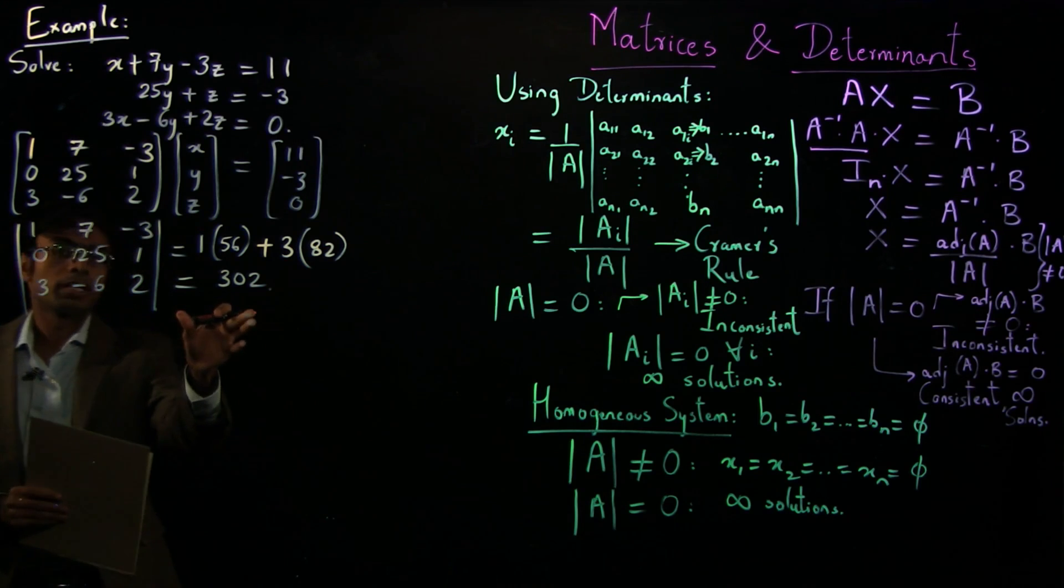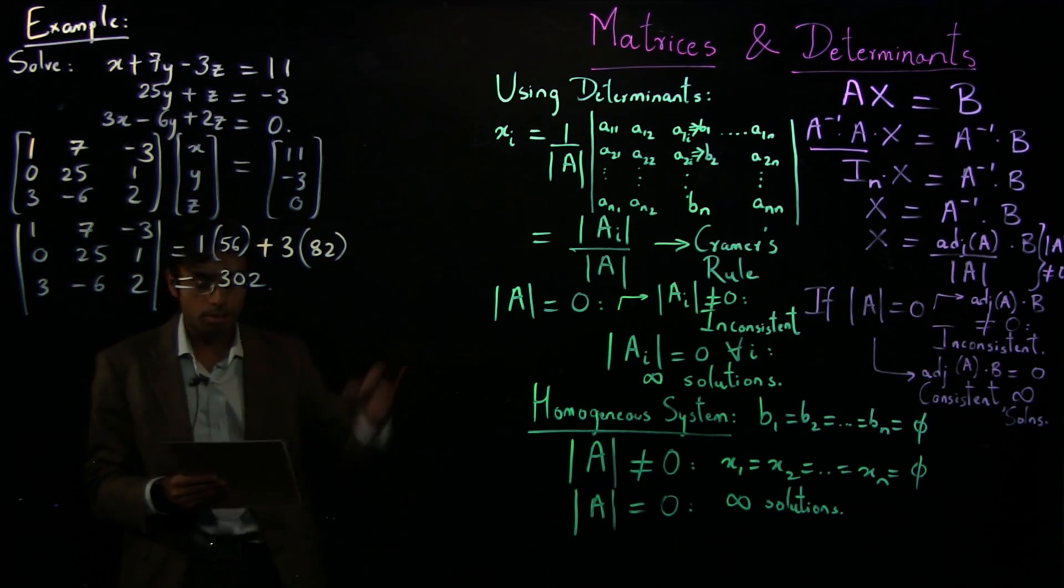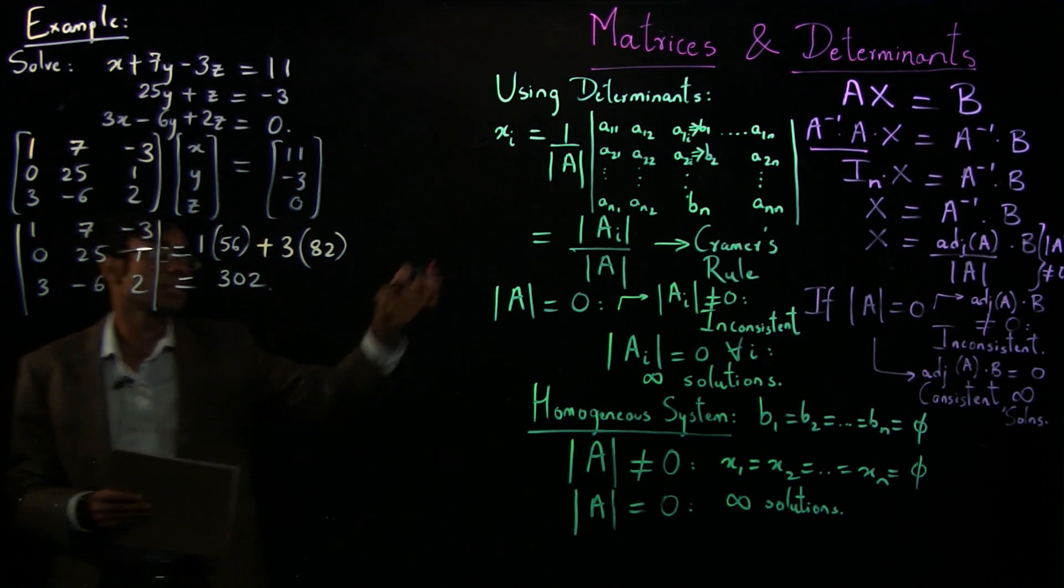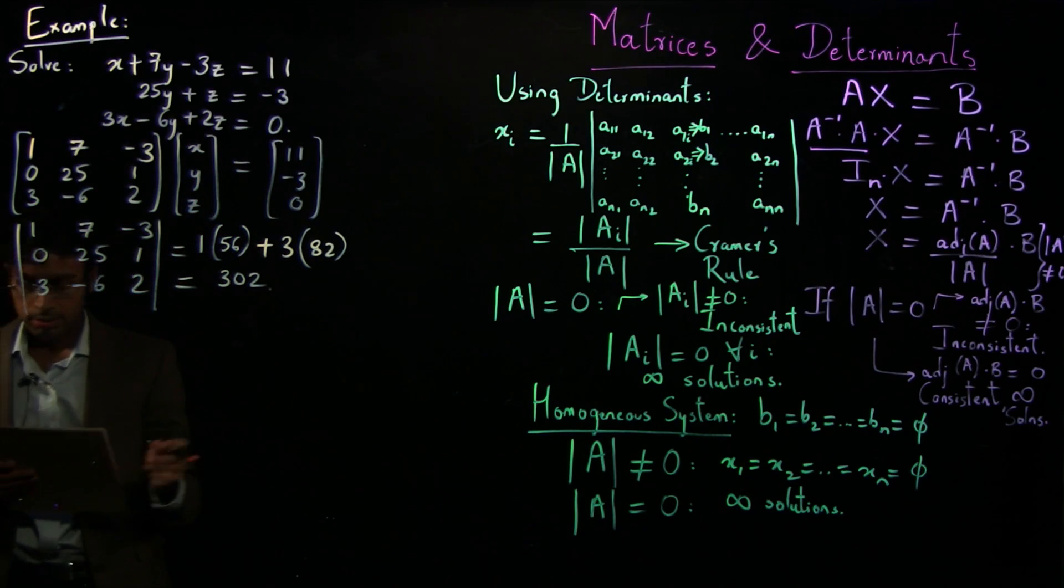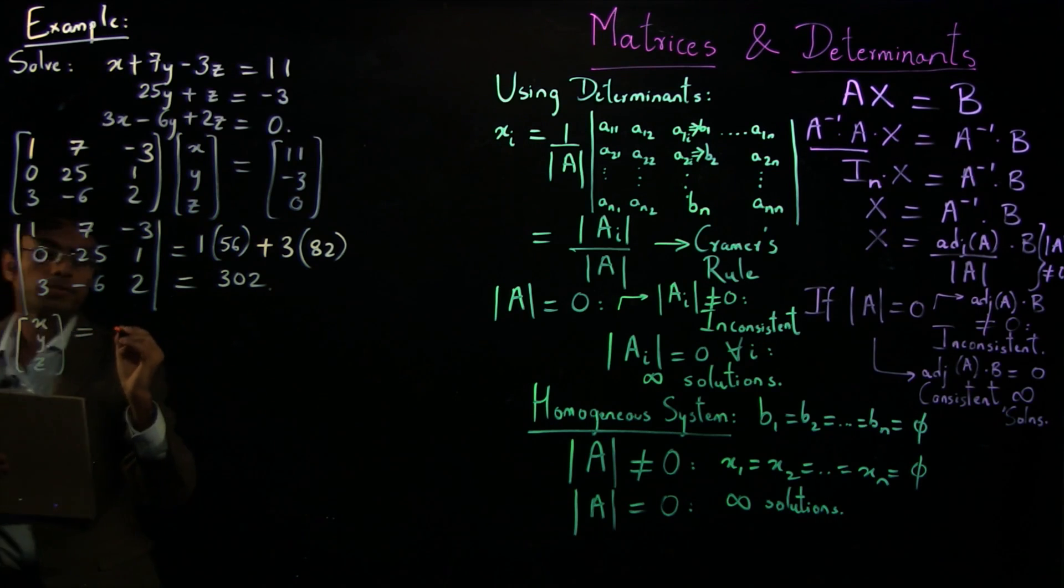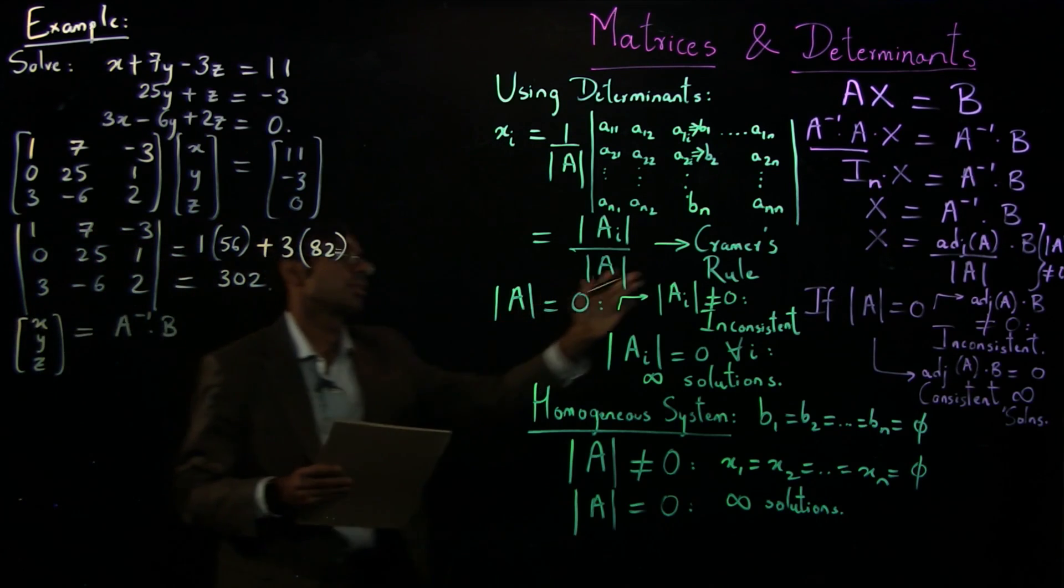So which means we can find out these unknown values. So because we are taking this as a worked out example, I want to demonstrate this by both methods. So let's first try to find out the values of x, y, and z by the matrix method. So using the matrix method, well, x, y, and z, you need to find out as A inverse times B using this definition.